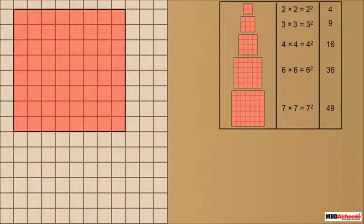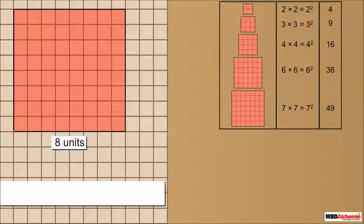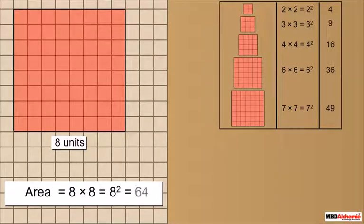Consider a square of side 8 units. It is further divided into 64 unit blocks. The area of this square is 8 into 8, which we write as 8 squared, which is equal to 64.